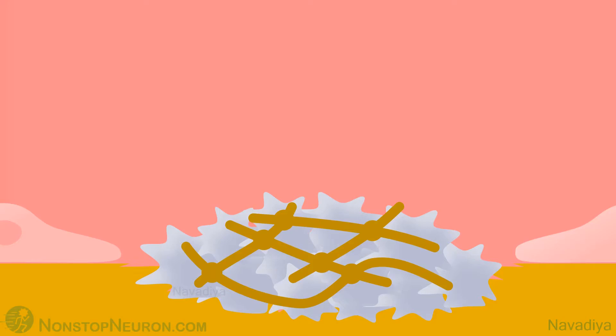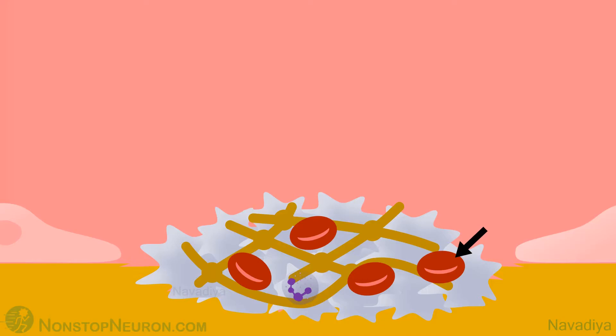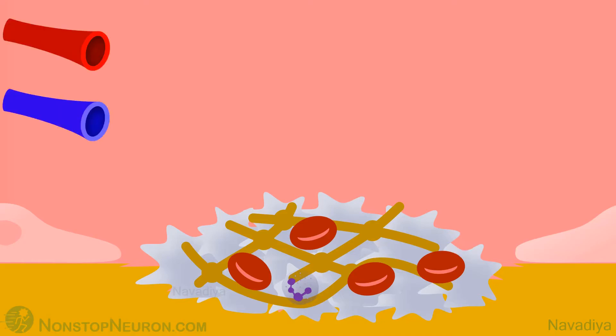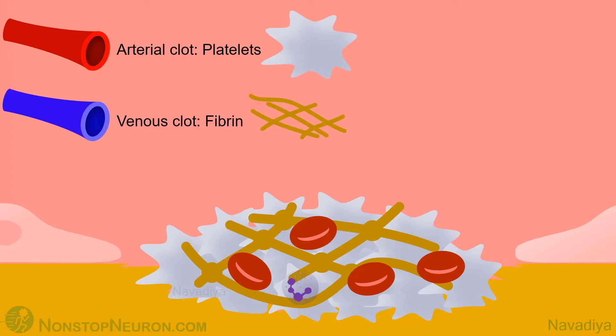Apart from platelets, other blood cells like red blood cells and white blood cells also get trapped when the clot is being formed. The composition of the clot varies depending on where it is formed. Arterial clots have a high proportion of platelets, whereas venous clots have a high proportion of fibrin. That's all about coagulation.